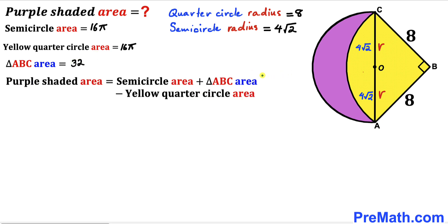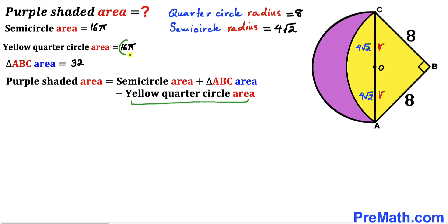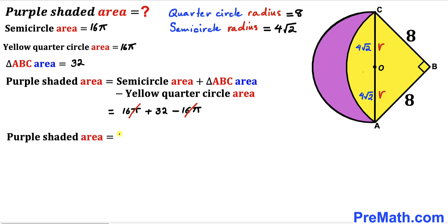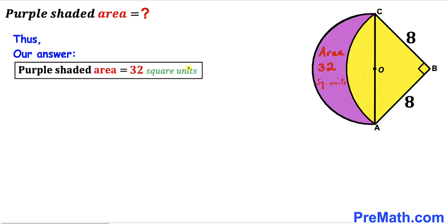In the final step, the purple shaded area = semicircle area + triangle ABC area − quarter circle area = 16π + 32 − 16π. The 16π terms cancel each other out, so the purple shaded area is 32 square units. That's our final answer.